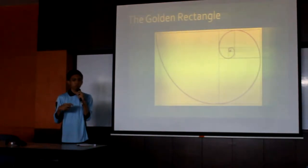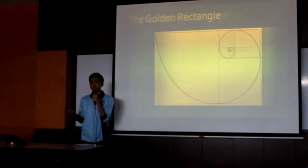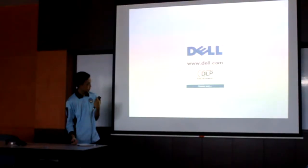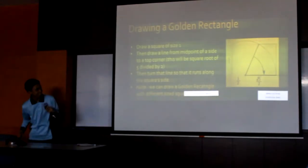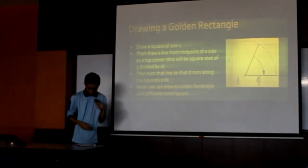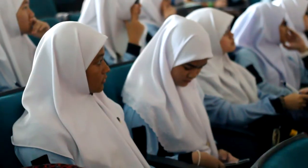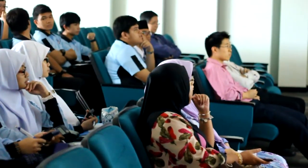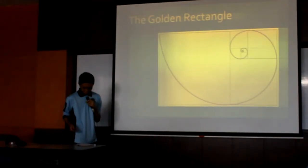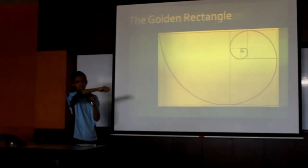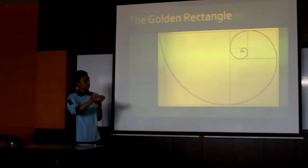Before we go on to the applications of the golden ratio in real life, we need to understand a very important concept: the golden rectangle. In geometry, a golden rectangle is one where the length divided by the breadth gives you 1.618 — the golden ratio.